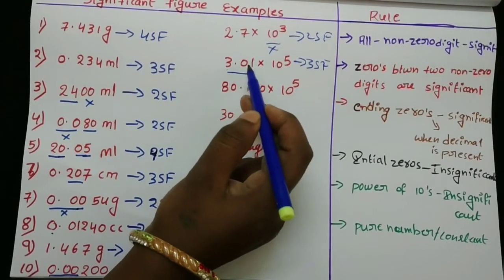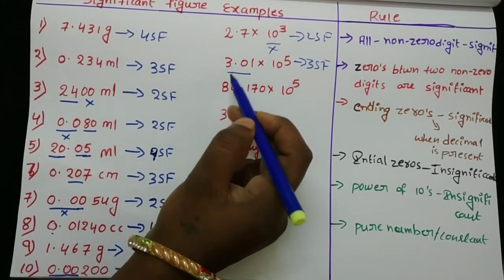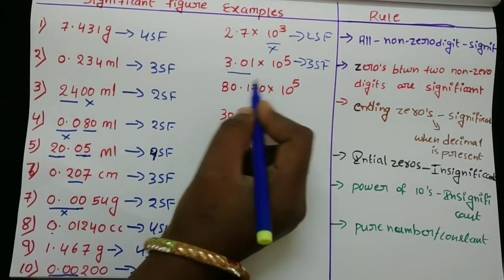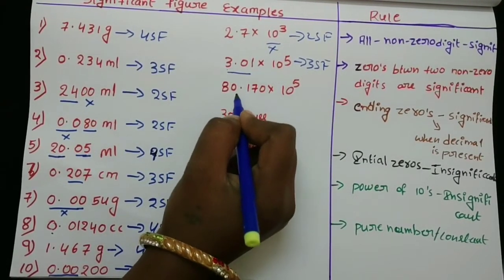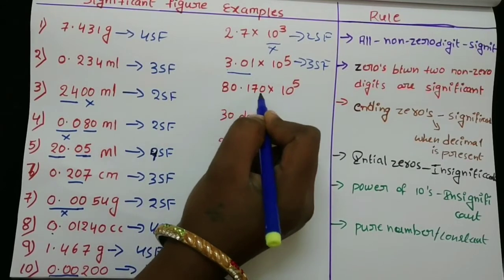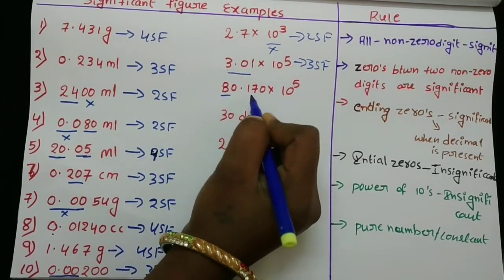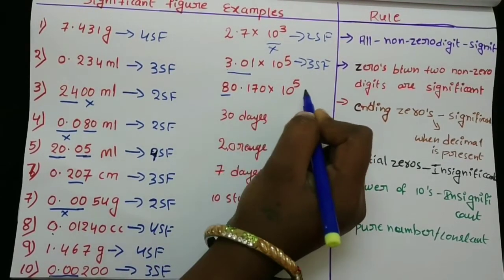Zero between two non-zero digits is significant — for example, 80 or 170. So here there are three significant figures.